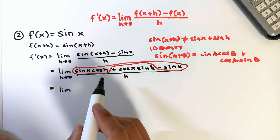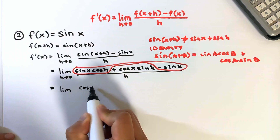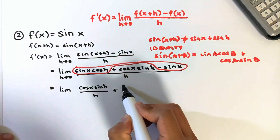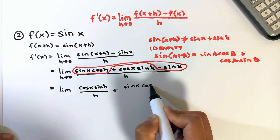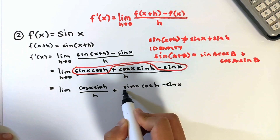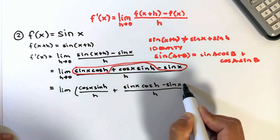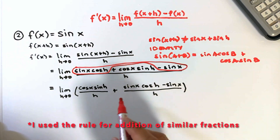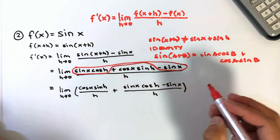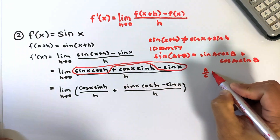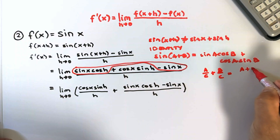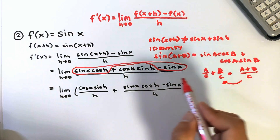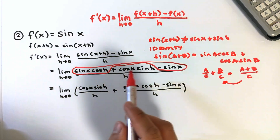I will rewrite this fraction as cosine x sine h over h, plus the remaining terms: sine x cosine h minus sine x, all over h, as h approaches 0. Note that I used the principle of addition of fractions — if we have a plus b over c, we can write that as a over c plus b over c.